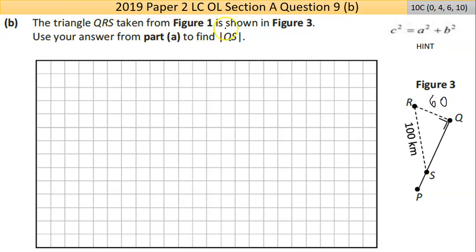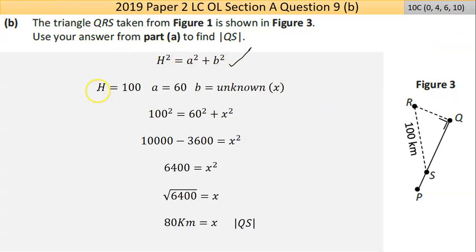Now, in part B, the triangle QRS taken from figure 1 is shown in figure 3. Use your answer from part A to find QS. I'm going to use the answer from part A, so the 60, to help find QS. We're looking here now, actually, Pythagoras will work, won't it? We're looking for that in there. So we're only focusing on this smaller triangle. We have the longest side, one of the other sides, so Pythagoras will work. So I've got the 100 and the 60, so my two of the three unknowns, put them in. I ended up at 80, and the units there is kilometers. So that's a good 10 marks as well. Just use Pythagoras, that's great.